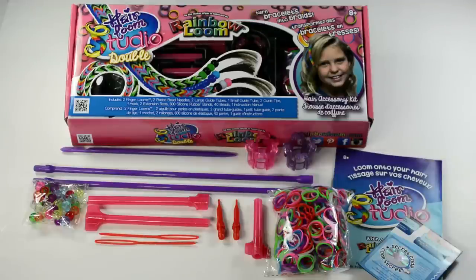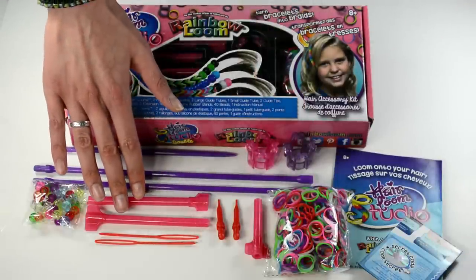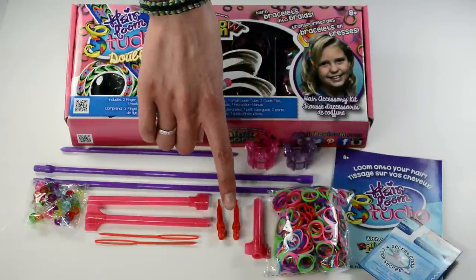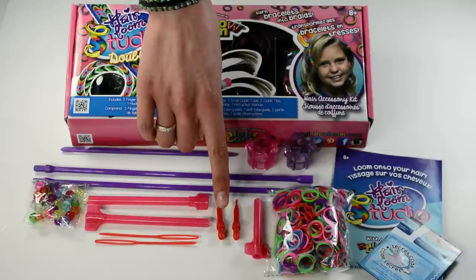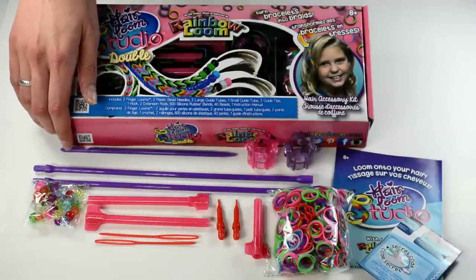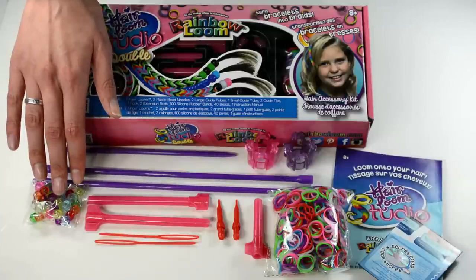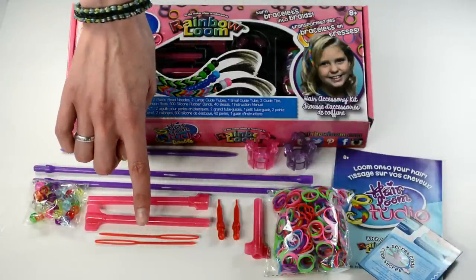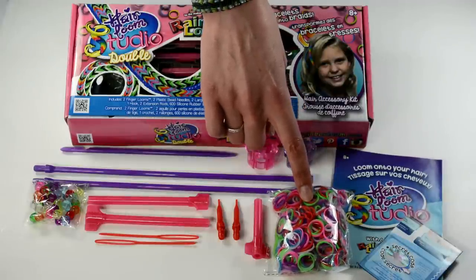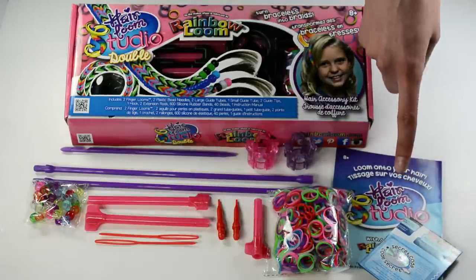And here's what's inside. Two easy to use finger looms, two large guide tubes, and one short guide tube to transfer your designs to your hair, two guide tips to turn existing creations into hair accessories, one hook to gently pull your hair through the guide tube, two extension rods to create elaborate designs, 40 beads, and two bead needles to add flair to your hair, 600 silicone bands that won't pull your hair out, and of course, your instruction manuals to help you create patterns on any of your existing looms.